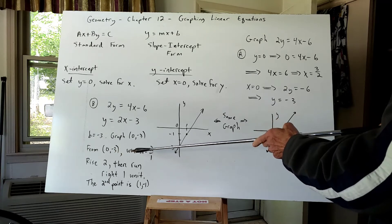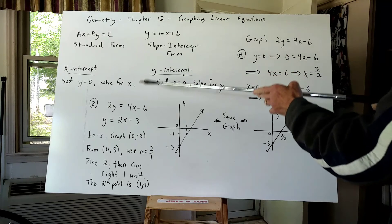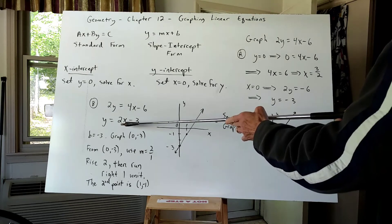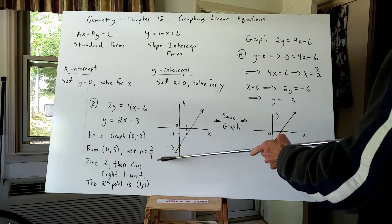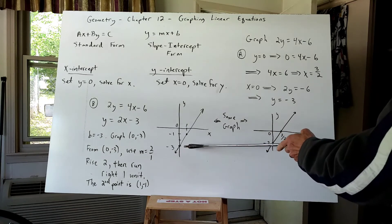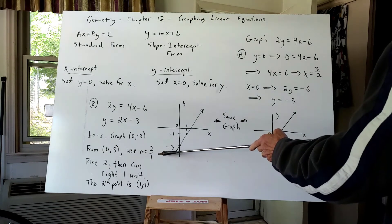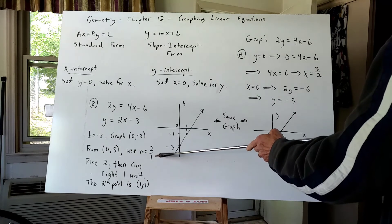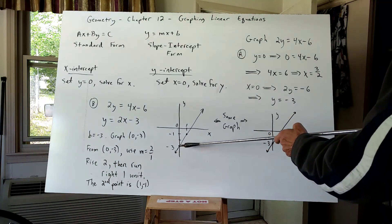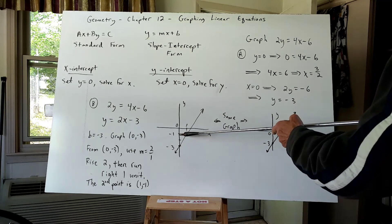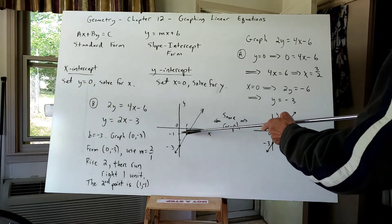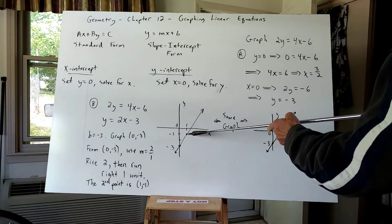From that point zero negative three, I'm going to use the slope M, which is the number in front of X. For this example, that number is two, but I'm going to rewrite it in fraction form so I can think rise over run. So two, I'm going to rewrite as two over one. So from the point zero negative three, I'm going to rise two and then run right one unit. So from negative three, I rise two, one, two. That takes me to negative one on the Y axis. And then immediately I come off to the right, one unit to the right, running parallel to the X axis.